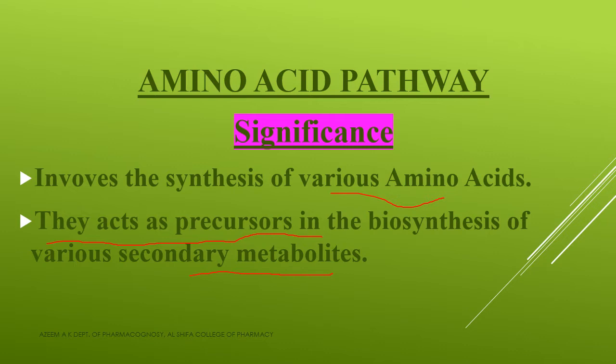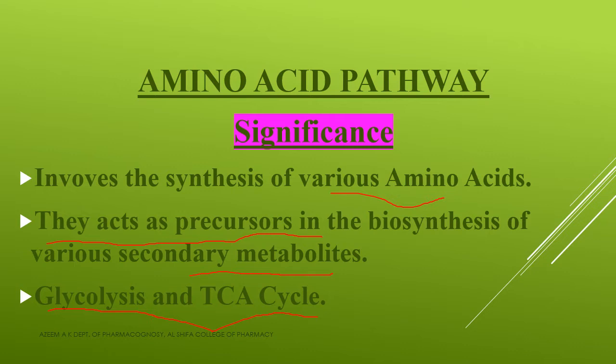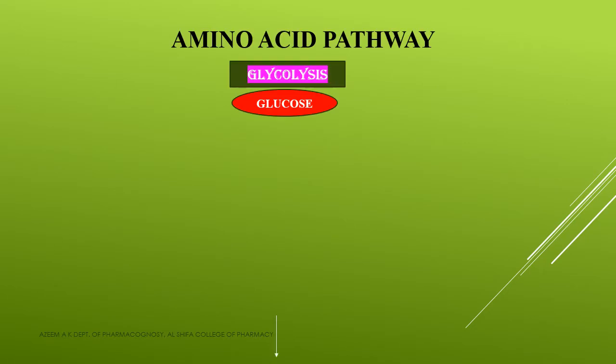The third and another important significance is that most of the amino acids are synthesized through glycolysis and from the TCA cycle. So these three are the important significances of the amino acid pathway: first, it involves the synthesis of various amino acids; second, they act as precursors in the biosynthesis of various secondary metabolites; and third, most amino acids are synthesized through glycolysis and the TCA cycle.